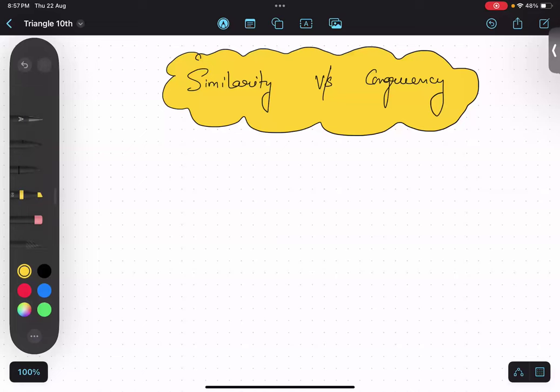Can you tell me what is the basic difference between similarity and congruency? Congruency is exactly the same, like equal sides, equal angles. Congruency is exactly the same. So we can say it can overlap.